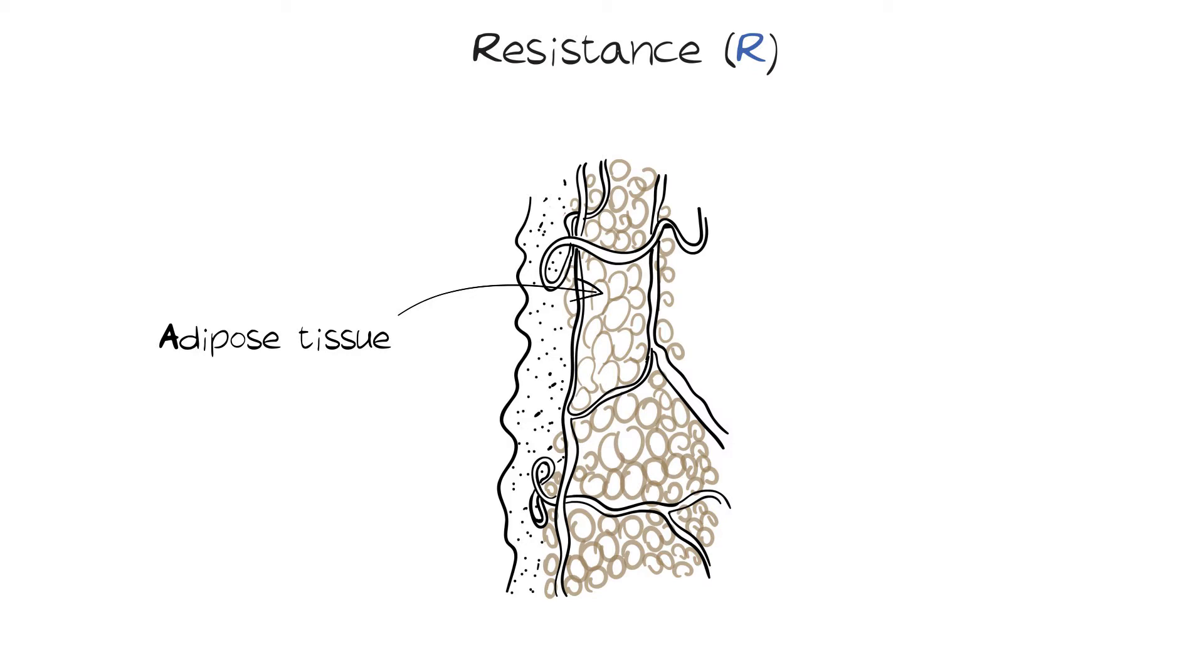Resistance is the measure of the amount of electrical current a substance will stop. For example, adipose tissue is about 80% fat. Fat is an excellent resistor to current.